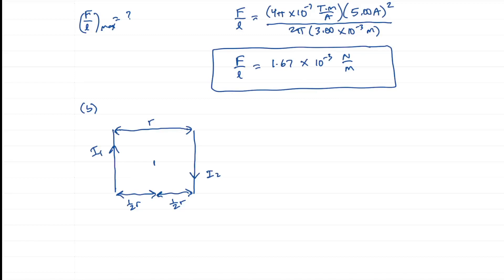Using the right-hand rule: put our thumb in the direction of I1, our fingers point into the page, so I1 makes a field B1 into the page. Put our thumb in the direction of I2 and our fingers also curl into the page, so B2 is also into the page. To find the force on I1, we point up the page, middle finger into the page, and our thumb points out. Do the same for I2: finger down the page, middle finger into the page, thumb points out.